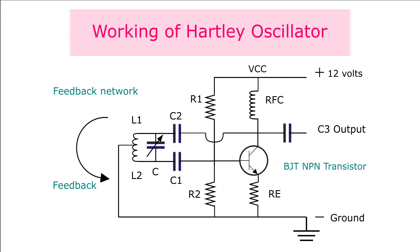The collector current signal reaches the tank circuit through the output coupling capacitor C2. It charges the capacitor C of the tank circuit and the energy is stored as an electrostatic field. When the capacitor C is fully charged, it then goes into discharge and this discharge reaches the inductor L1. The L1 gets charged and the charge is stored as a magnetic field.